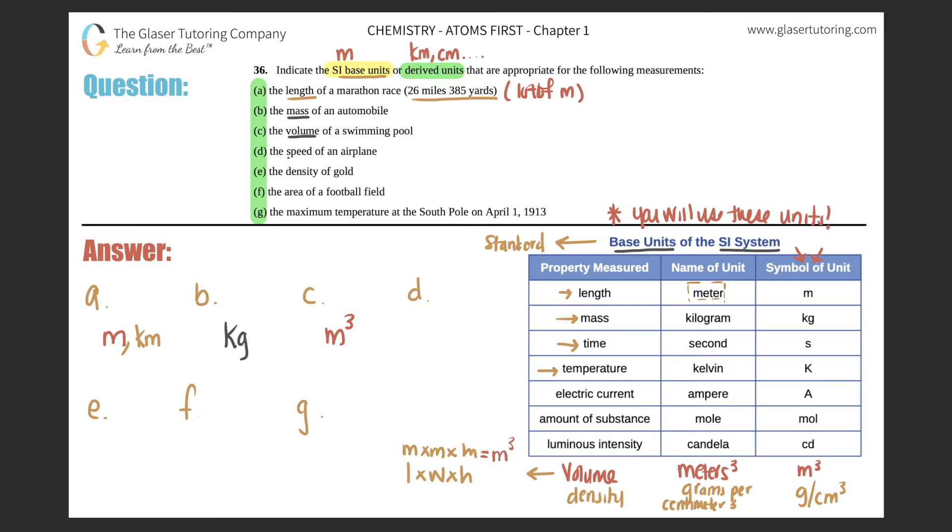D, the speed of an airplane. Well, what does speed equal? Speed is distance divided by time. So a distance is a type of length technically, so it would be length over time. And length we know is meters, in this case time is seconds.